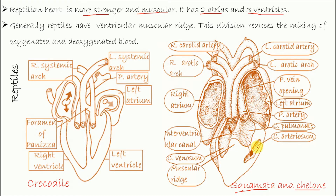Cavum arteriosum receives blood from the left ventricle and it supplies blood to the departing arches through the interventricular canal. Whereas cavum venosum receives blood from the right atrium; this blood is deoxygenated and through the muscular ridge goes to the cavum pulmonale. In this way cavum pulmonale does not receive blood directly from the atria.